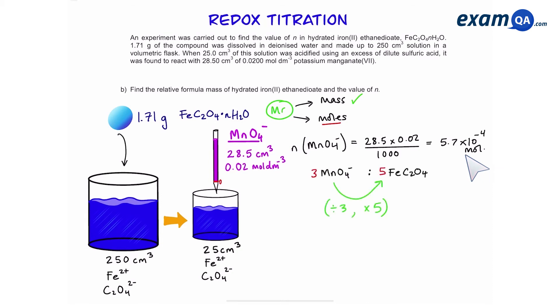Now using part A we can work out how many moles of FeC₂O₄ we'll have by simply dividing manganate by three and then multiplying it by five because it's a three to five ratio. So that gives us 9.5 × 10⁻⁴ moles. This is the number of moles however in 25 cm³. Our original volume was 250, so we have to multiply it by 10.